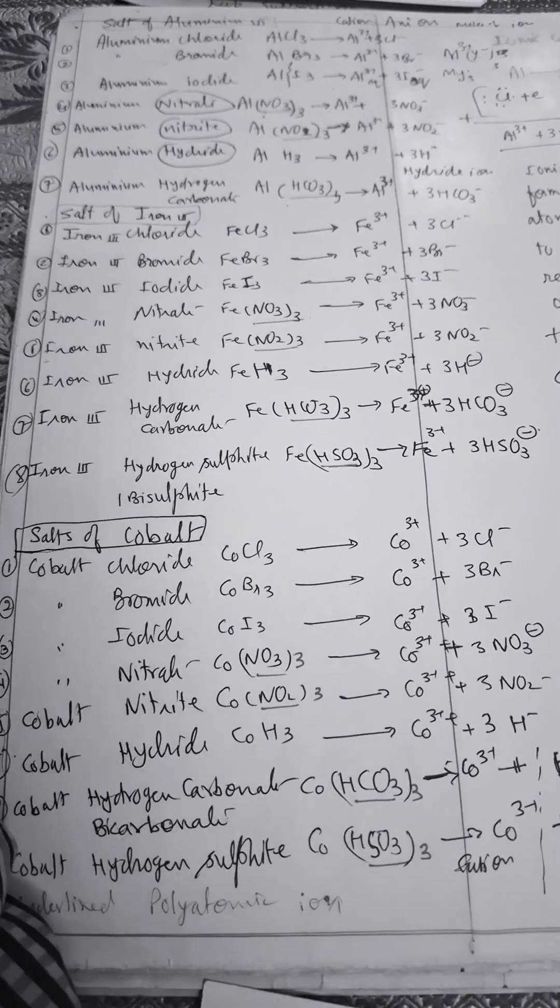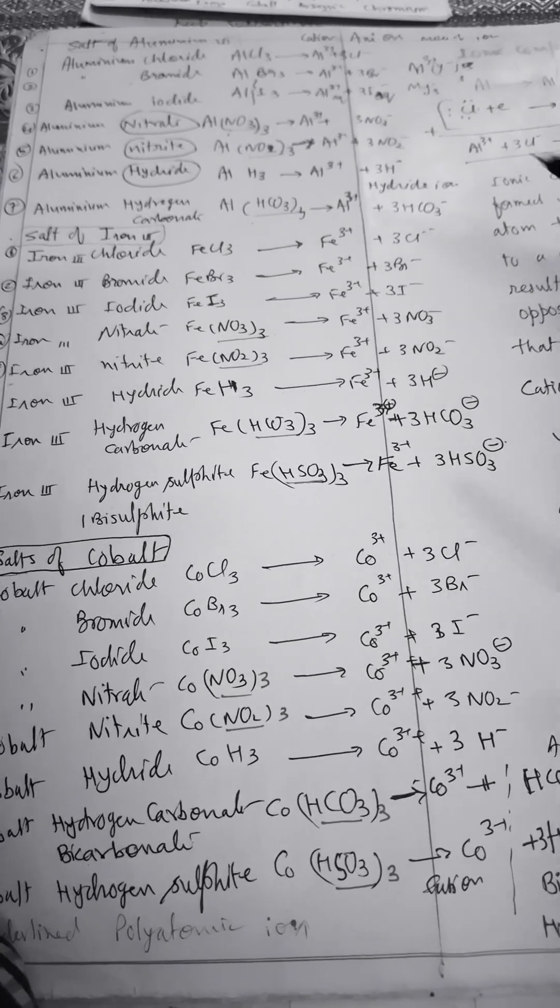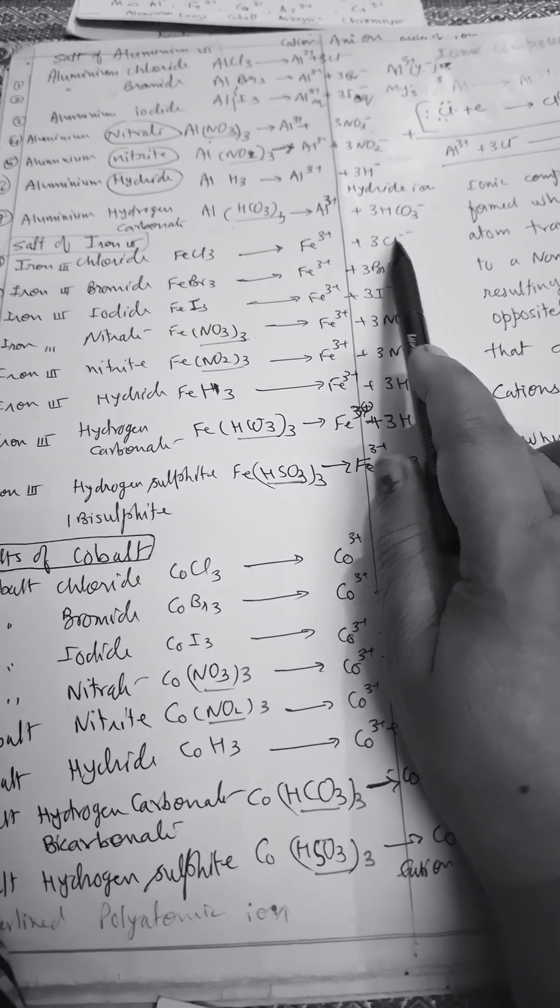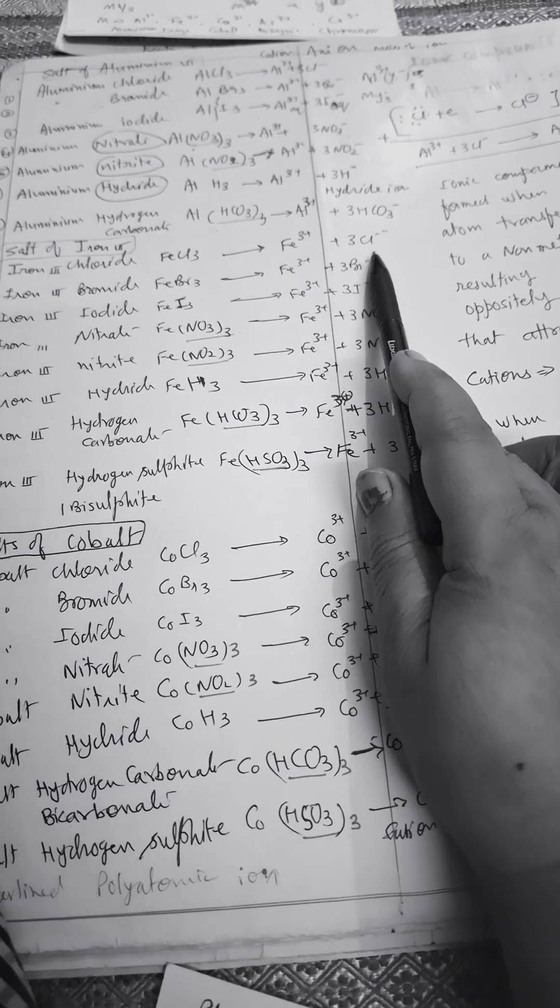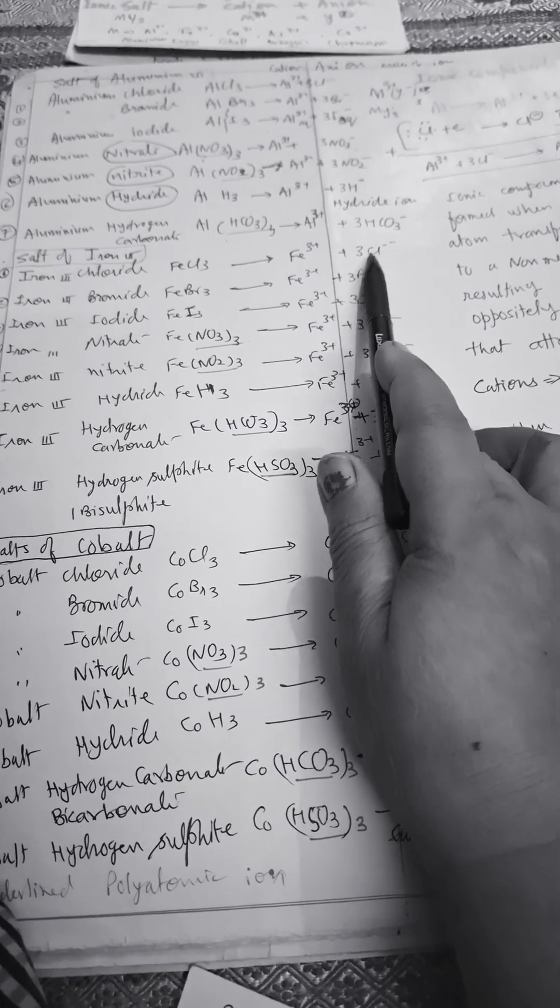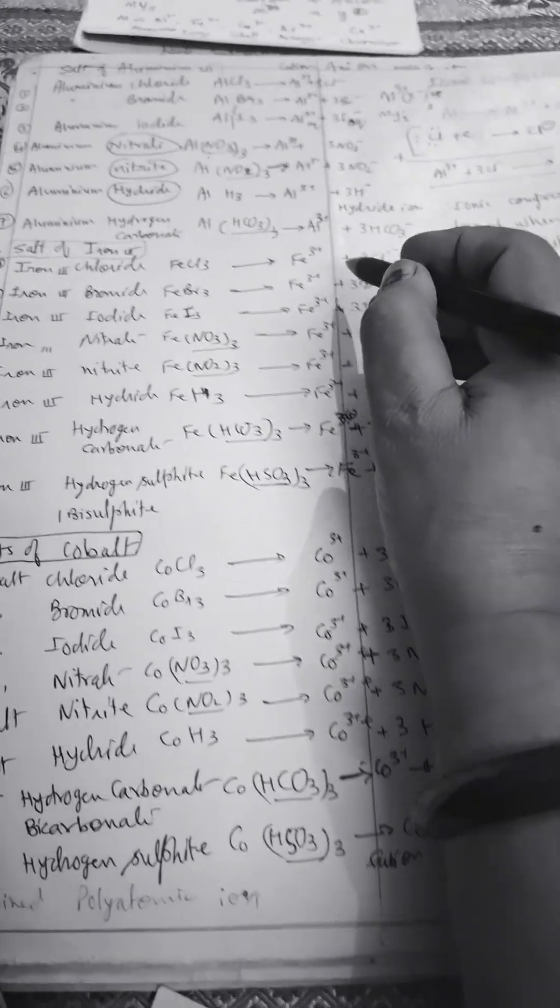So you will be very good in ionic chemistry. Fe is three positive, three negative. Okay. And when they will have electrostatic force of attraction will be there.